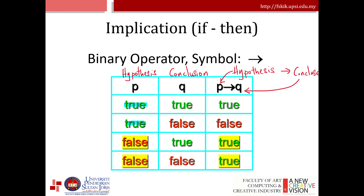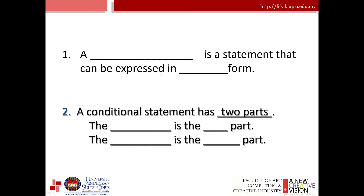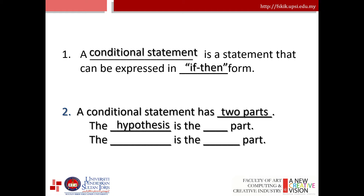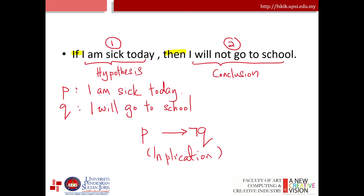Here is a quiz. A conditional statement is a statement that can be expressed in if-then form — you can see this in part one of my videos. A conditional statement has two parts: the hypothesis is the 'if' part and the conclusion is the 'then' part. For example: if I am sick today then I will not go to school. This is an implication from P then Q, because of the type of relationship between two statements or sentences.